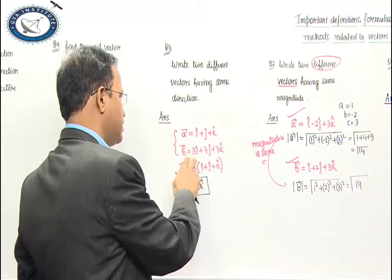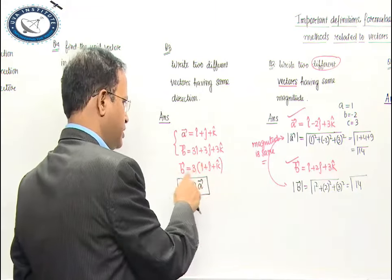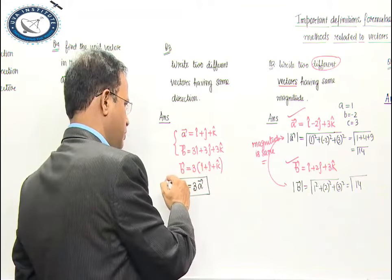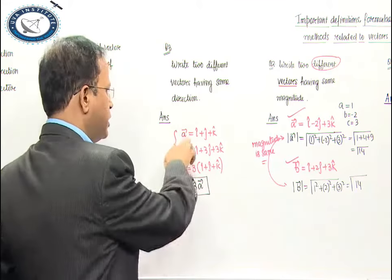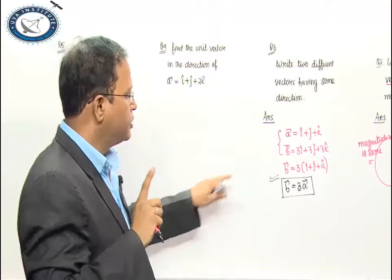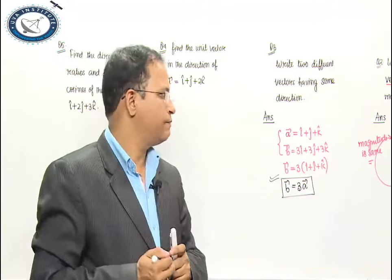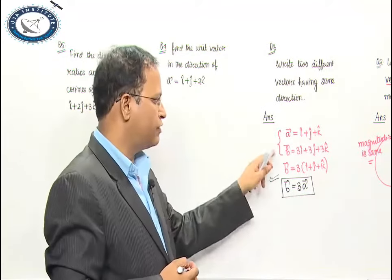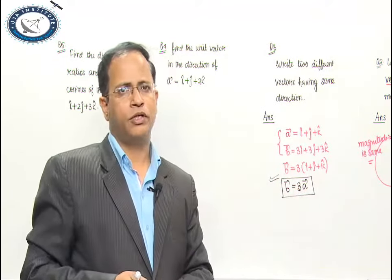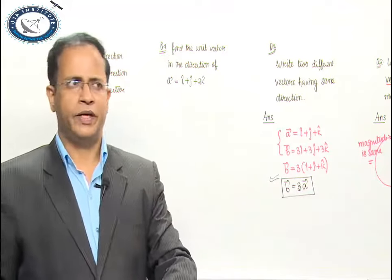So we have two different vectors and you can see the direction is the same. We can write it this way. These are the examples — one marker questions. They have asked for two different vectors with the same direction, so I have used the concept of collinearity or parallel vectors.